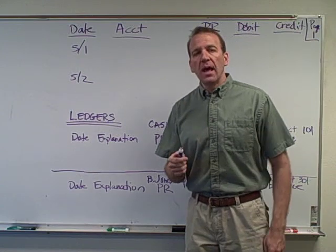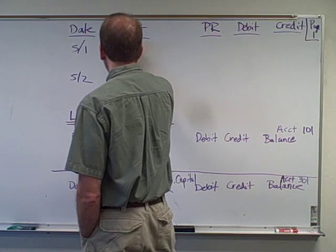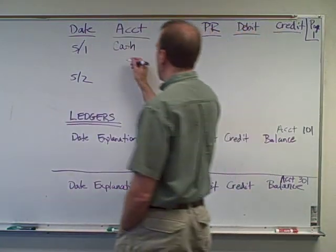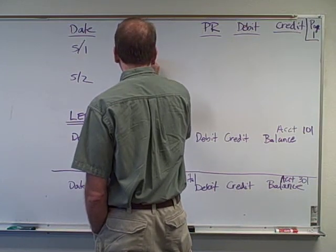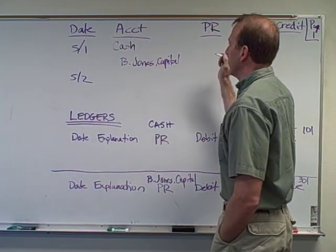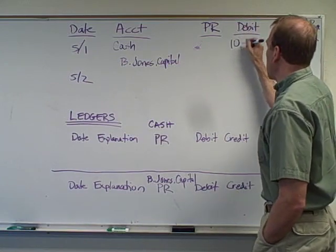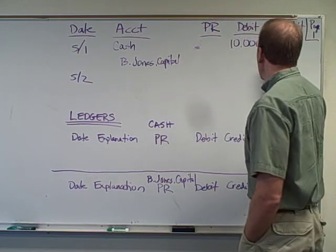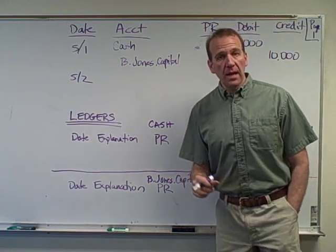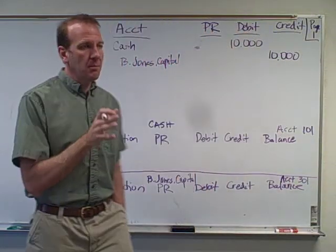Let's say this is a brand new company and the owner puts $10,000 into the business. So the account would be cash, and our owner is Mr. Jones. We're going to debit cash because a debit increases cash, and a credit will increase the capital account, because capital is an equity account and it increases with the credit. Kind of confusing — got to remember that.